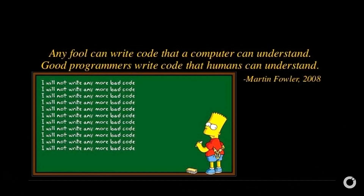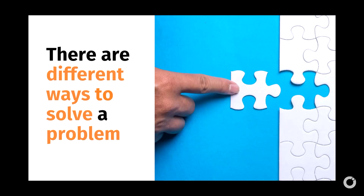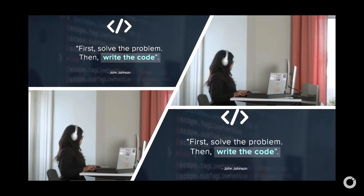One of my favorite quotes is from Martin Fowler's book — the purpose of course is for us to always try to write better code, not bad code. As developers we should write code that we can understand. There are different ways to solve a problem, and for me as a developer also working with cloud, it's important to think first about how we solve the problem before we start writing the code.